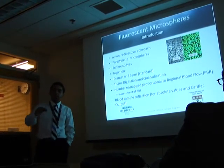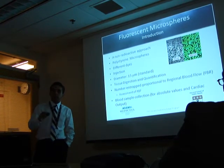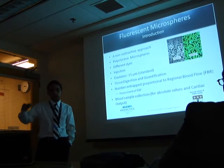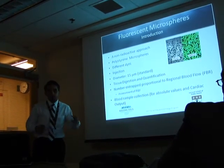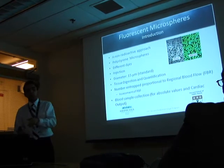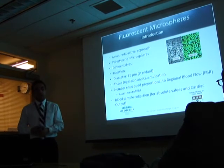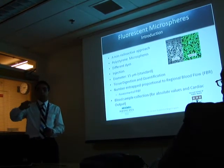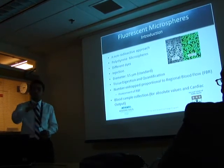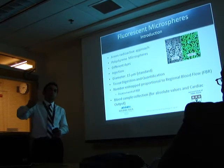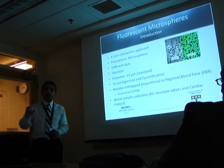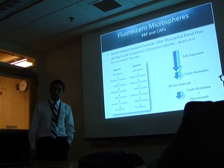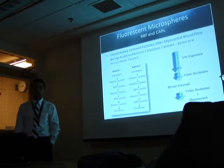If we want absolute values about blood flow in the tissue sampled, we can also do a blood sample collection while injecting. Then we will know the dilution, and with that we can calculate how many milliliters per minute per gram of tissue is being perfused. We can also take different pieces of a given organ and map the perfusion within that organ. It's an interesting and powerful technique.